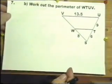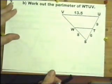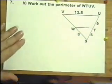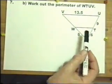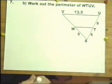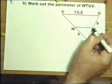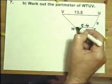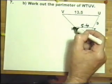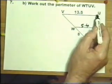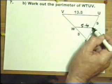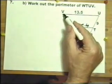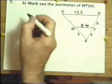WTUV. So we've got to do this distance which we've just worked out as 5.4, so that's okay. The perimeter of WTUV is going to be 5.4 plus 9 plus 13.5 plus, so I've got to find this distance first.